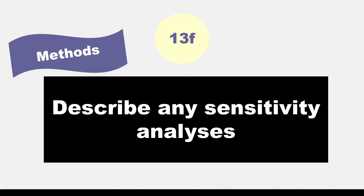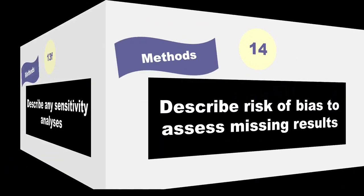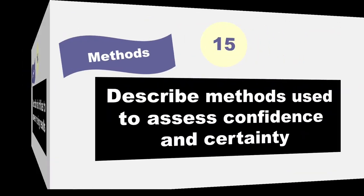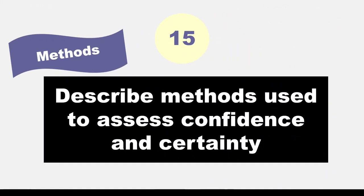Moving right along. Item 14 requests that you describe any methods used to assess risk of bias due to missing results in a synthesis, such as those arising from reporting biases. In item 15, you must describe any methods used to assess certainty or confidence in the body of evidence for an outcome.